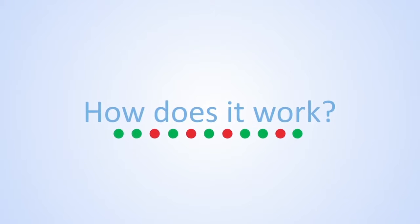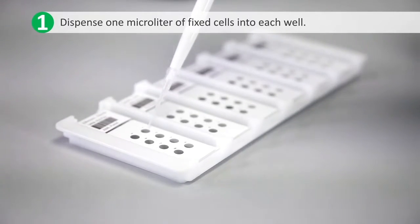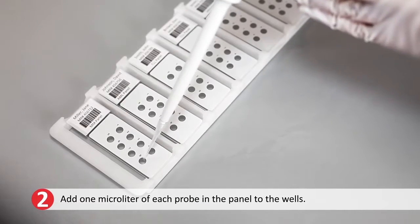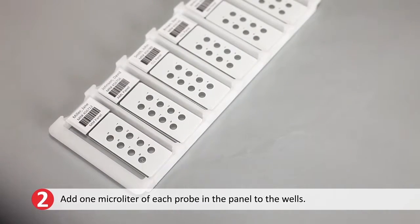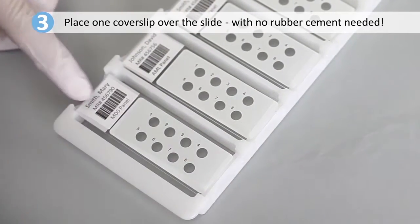How does it work? Dispense one microliter of fixed cells into each well. Add one microliter of each probe in the panel to the wells. Place one cover slip over the slide with no rubber cement needed.